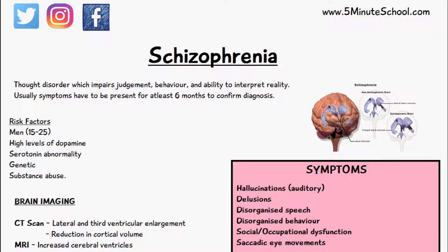Welcome to 5-Minute School and in today's video we'll be talking about schizophrenia. Schizophrenia is a thought disorder which impairs judgment, behavior and ability to interpret reality. The normal case for the diagnosis of schizophrenia involves the symptoms being present for at least six months to confirm this diagnosis.